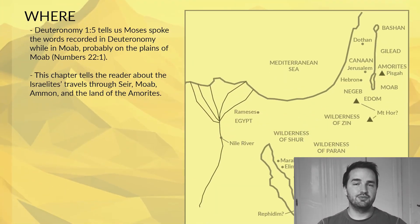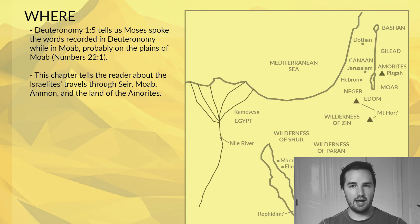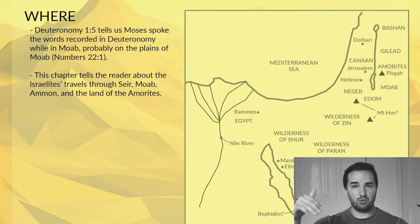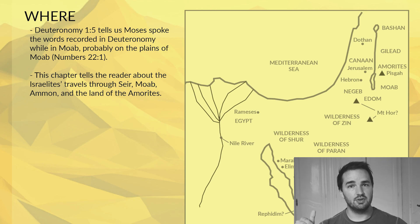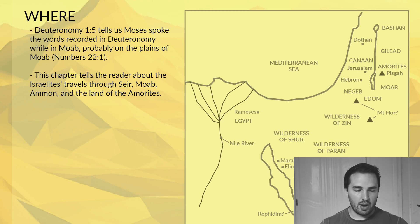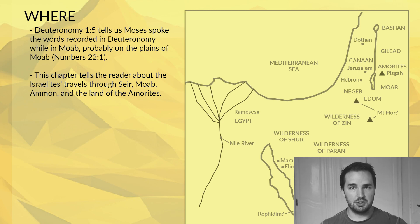Down to our map — where did these events take place? Deuteronomy chapter 1 verse 5 tells us that Moses spoke the words recorded in Deuteronomy in Moab, probably on the plains of Moab where the Israelites were camped, and that was near Pisgah. You can see Pisgah, the mountain on the map, just to the east of the Dead Sea or the Salt Sea. This chapter tells us about the Israelites' travels through a place called Seir, Moab, Ammon, and the land of the Amorites, which you can see most of those places on the map.